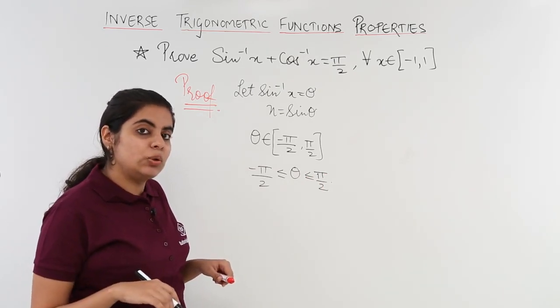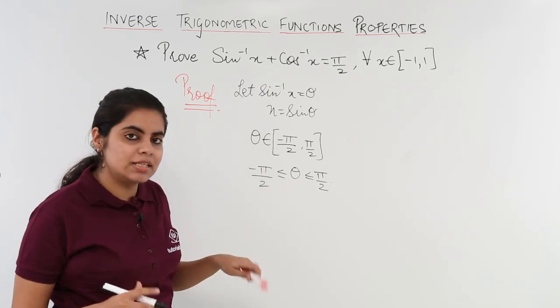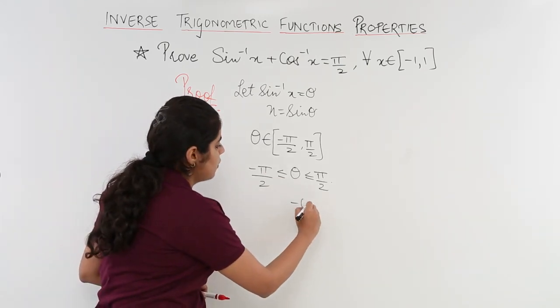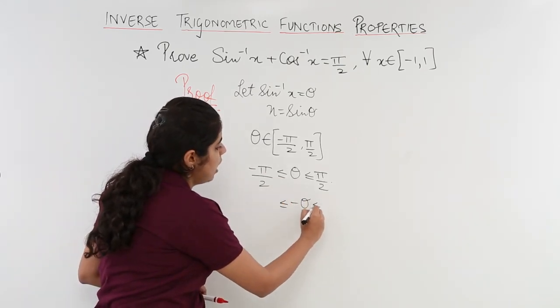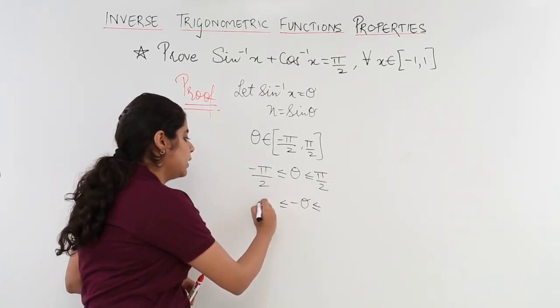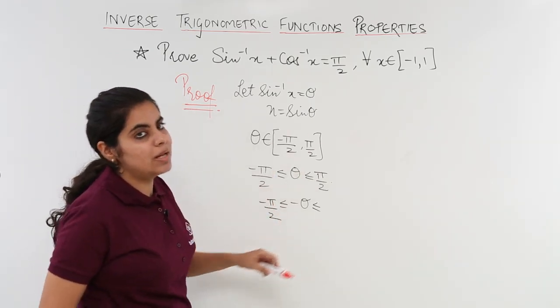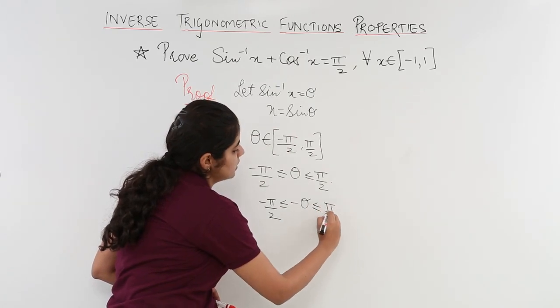Now another thing what I can do is I can replace or substitute theta by minus theta. So if I have theta as minus theta what will happen? Pi by 2 will become minus pi by 2 and that will come to the other side and this minus pi by 2 will become plus pi by 2 and will go to the other side.